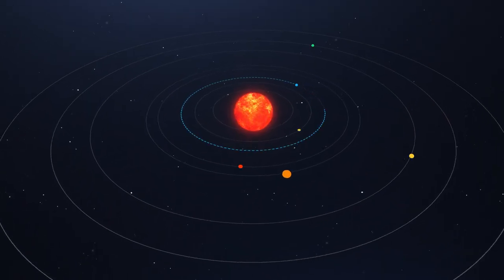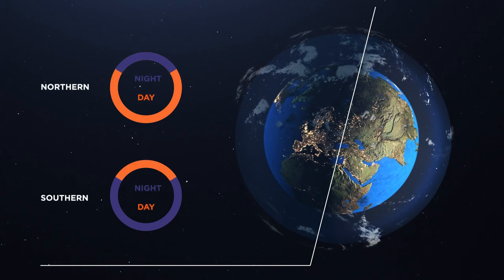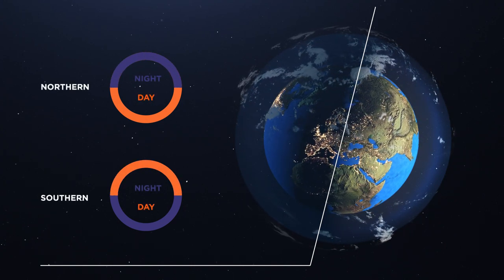As our planet orbits around the Sun each year, the tilt of the Earth's axis determines the length of our days and the amount of sunlight we receive.